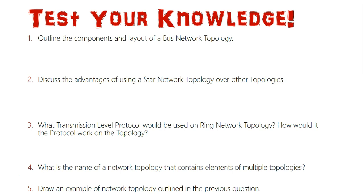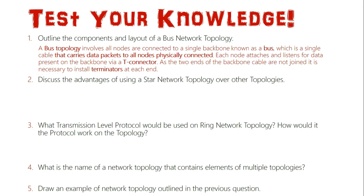Question one: outline the components and layout of a bus network topology. A bus topology involves all nodes being connected to a single backbone cable known as the bus, which carries all data packets to all physically connected nodes. Each node listens to the bus cable via a T-connector. At both ends of the bus line, terminators are installed so that data isn't bounced up and down the network.